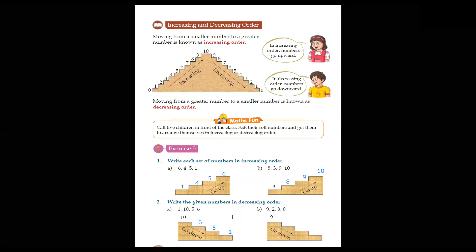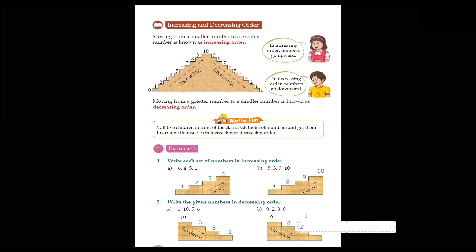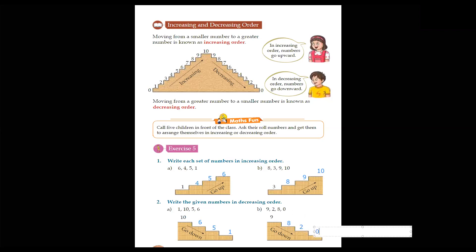Next exercise: 9, 2, 8, and 0. So 9 is already given. Our second number is 8, next is 2, and the last smallest number is 0.